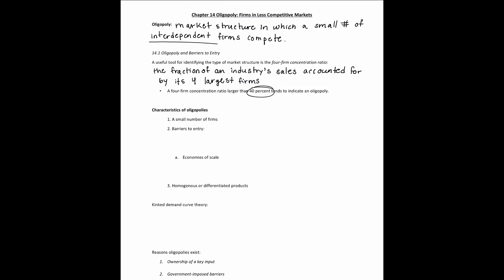Several examples of industries that would actually be oligopolies include the cigarette industry, beer, aircraft, and automobiles.